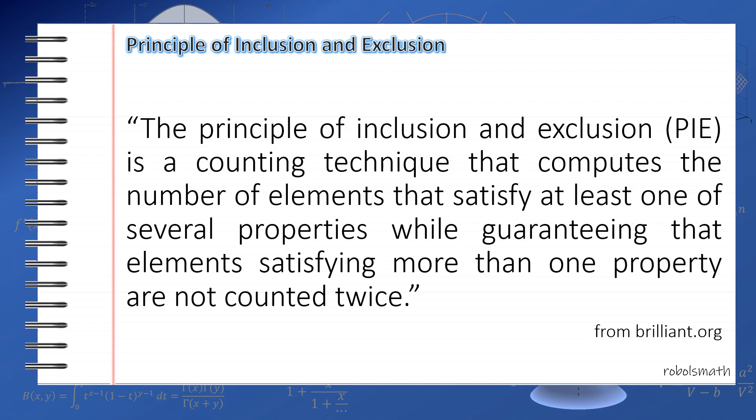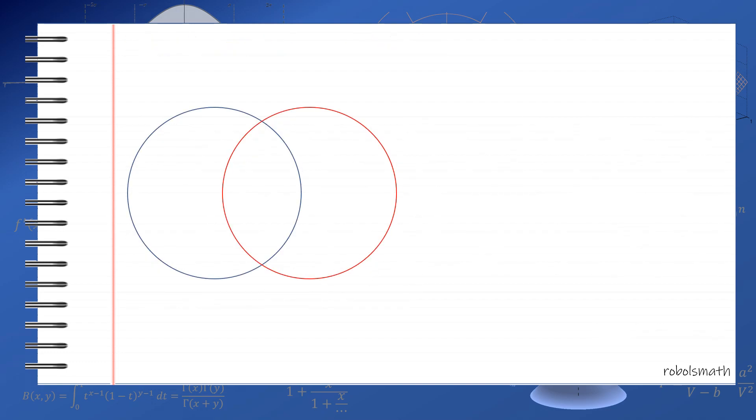As an introduction, this is best illustrated if we discuss sets. I have two sets here. Let's call the blue one set A, and then the red one set B. The number of elements of A is denoted by the cardinality of A, which looks like the absolute value. If we want to know the total contents of these two circles, the simplest thing to do is find how many elements are in A, then add the contents of B.